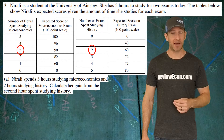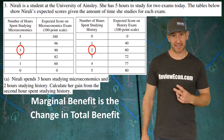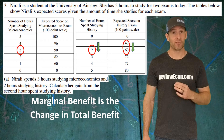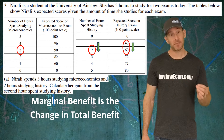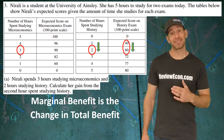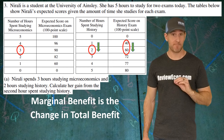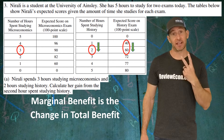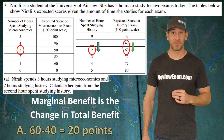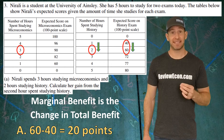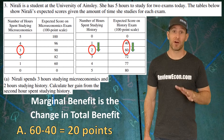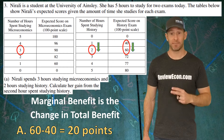In order to do that, we need to look at the marginal benefit of that second hour. The first hour, she has a score of 40 points out of 100. For the second hour, the total score is now 60. That's a marginal benefit of 20 points. You just show the math to get this point because it says calculate: 60 minus 40, that's the new score minus the old score, giving us a marginal benefit of 20 points.